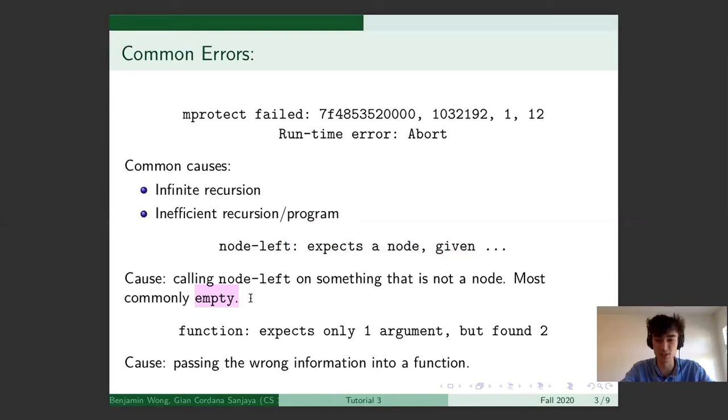Usually you'll want to check if your tree is empty before you try to investigate any of its subtrees. Because if you ask about a subtree of something that doesn't have a subtree, Racket won't know what to do, so it'll throw this error. For example, the empty tree doesn't have any subtrees.